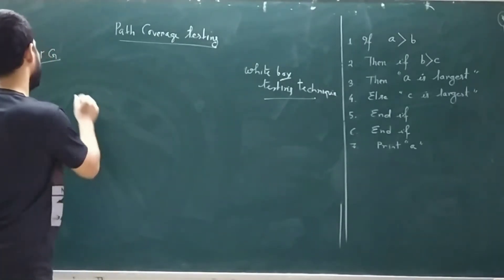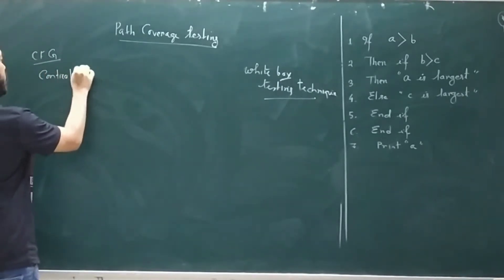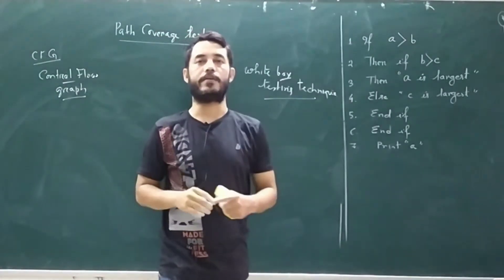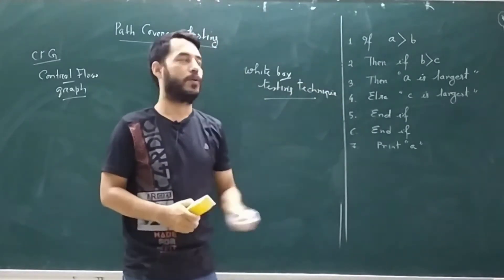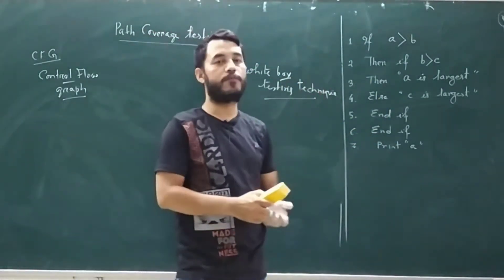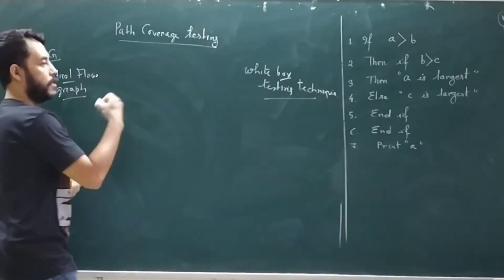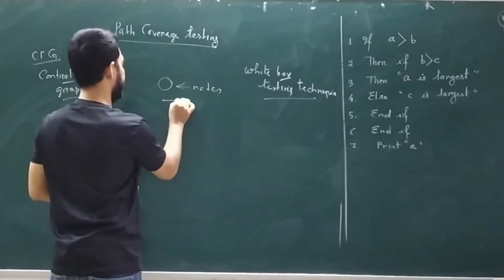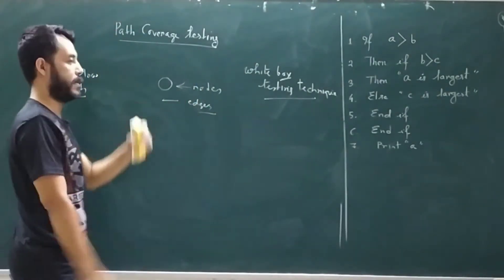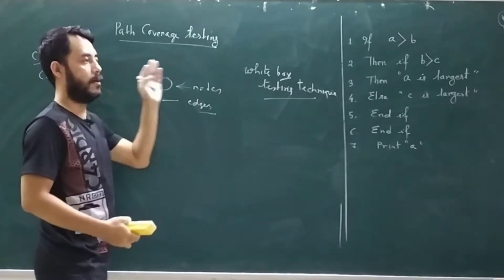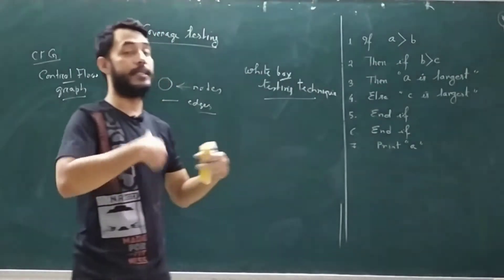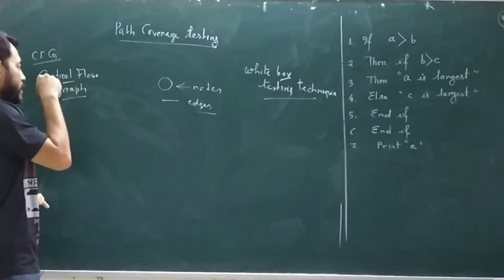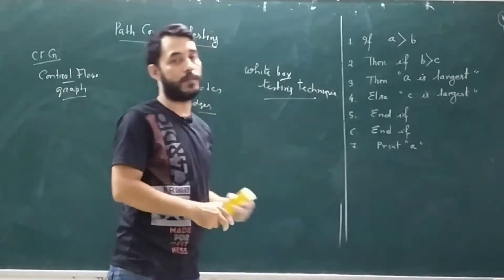To know the path coverage technique you should know what is CFG — that means what is a control flow graph. The control flow graph is a graphical representation of a particular program under execution. The basic building blocks of a CFG are nodes and edges used to represent the particular program. A video link is given in the description since we have already discussed CFG in detail.